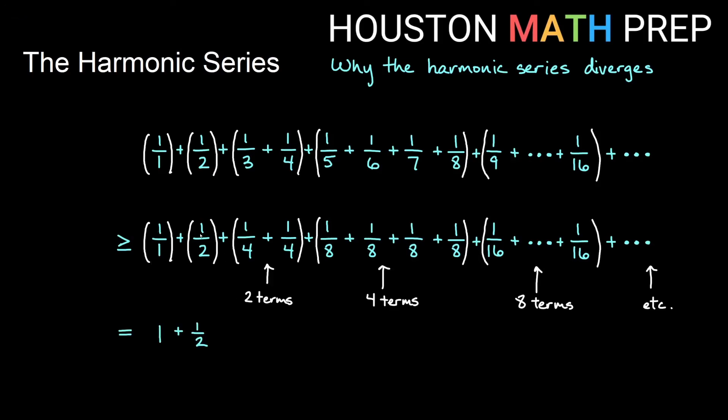So we start with 1, we have a half, then I have 2 1 fourths, that's going to give me 2 fourths, which is a half. Now I have 4 1 eighths, 4 eighths is also 1 half. The next eight terms are going to give me an additional 1 half. Then the next 16 terms would give me a half, the next 32 terms would give me a half, etc.